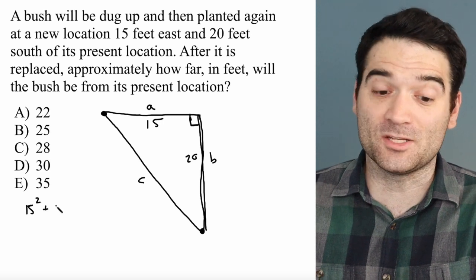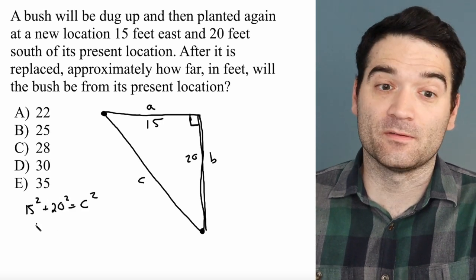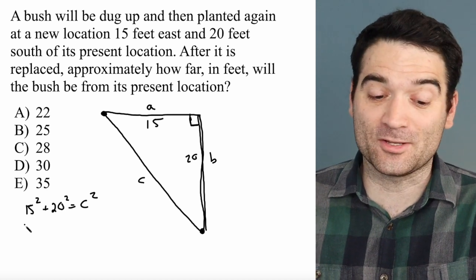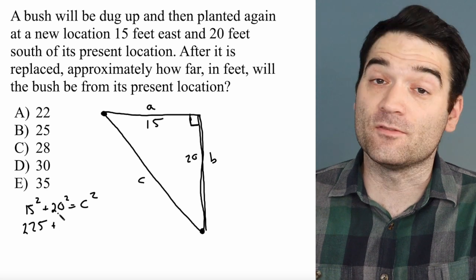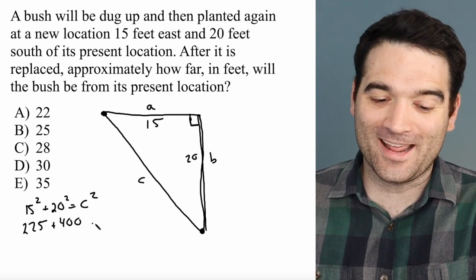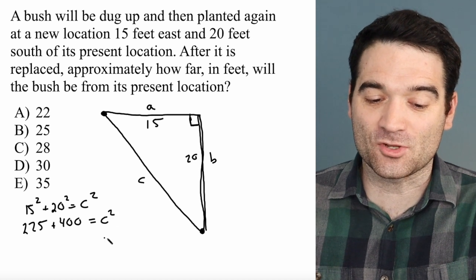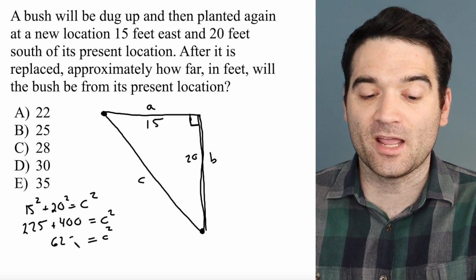15 squared, A squared, plus B squared, 20 squared, is equal to C squared. Well, 15 squared, if you use your calculator, is 225. 20 squared is 400. 20 times 20. Use your calculator if you don't know that. And I add that together and that makes C squared. So that means C squared is equal to 625.